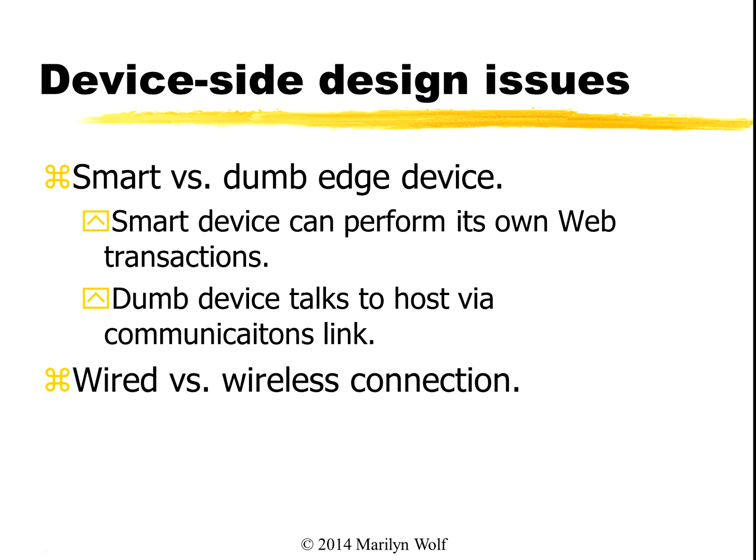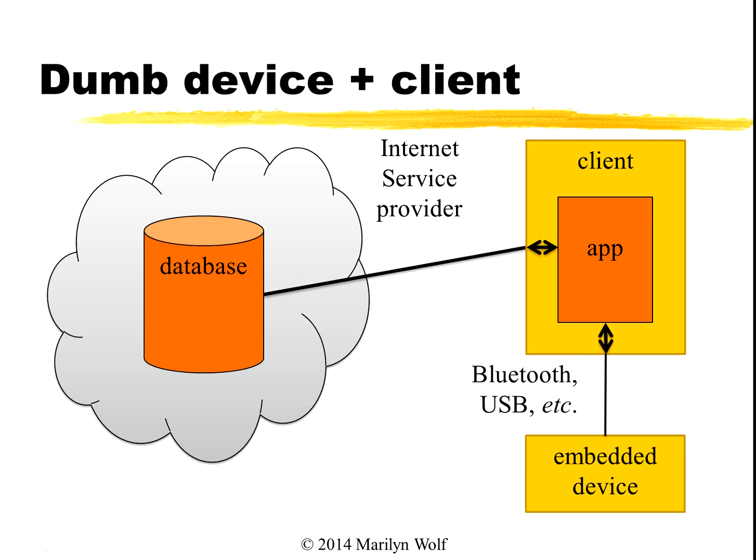We also have to think about what type of network connection we're going to use. Do we use a wired versus wireless connection? Do we use Wi-Fi, Bluetooth, or Zigbee? Those decisions affect things like power consumption and also what chips and boards we need to use for the system. If we think about the architecture of a device that uses a dumb edge device, we have our embedded device connected via Bluetooth, USB, or some other connection to a client machine. That client machine runs an app that talks on one hand to our embedded device and on the other hand to the cloud, so we have to develop both the embedded device and the app.